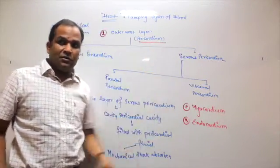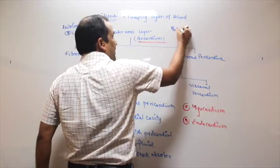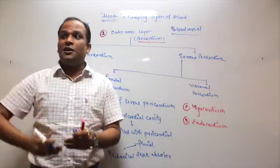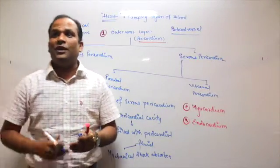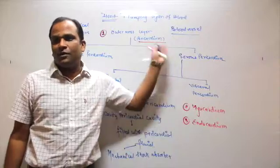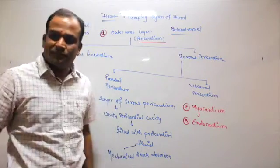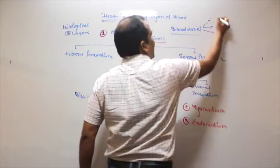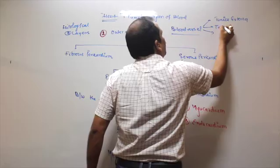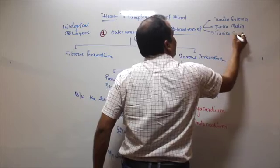For blood vessels, the layers are named differently. The layers of a blood vessel are: tunica externa, tunica media, and tunica interna. 'Tunica' means covering. So there are three coverings — the outermost is externa, the middle is media, and the innermost is interna.